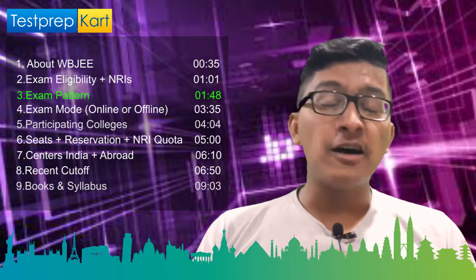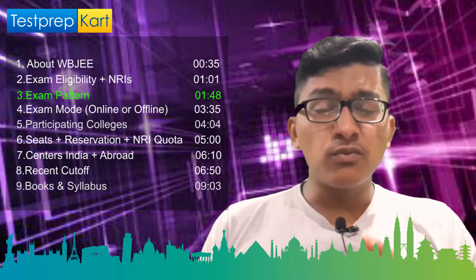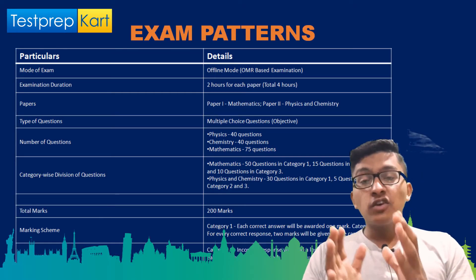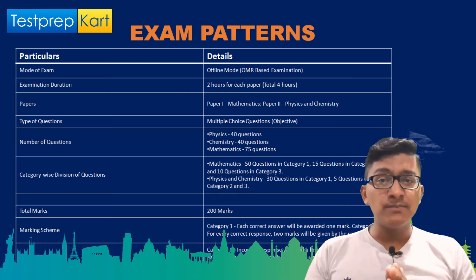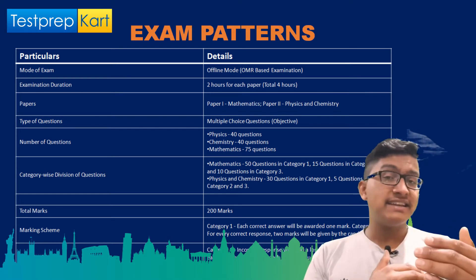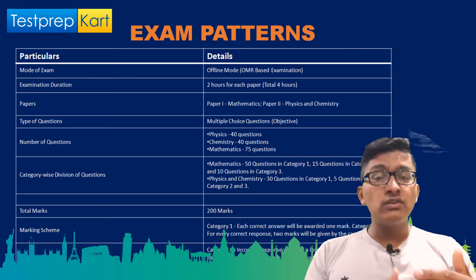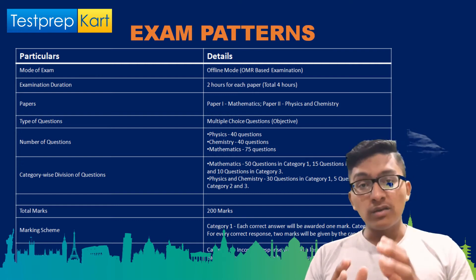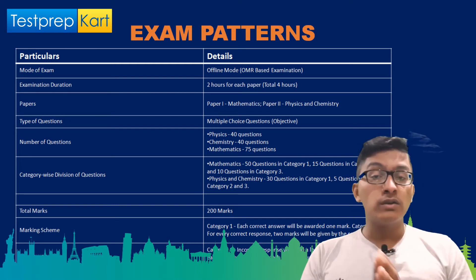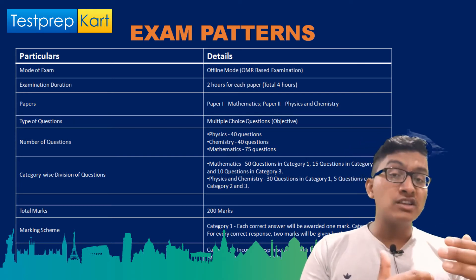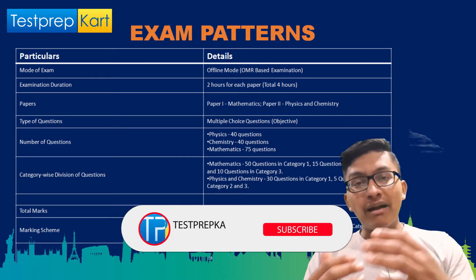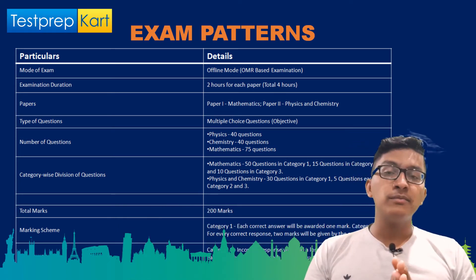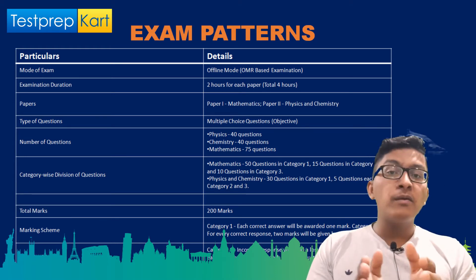The WBJEE exam pattern is somewhat complicated compared to some other regional examinations. There are two papers. Paper 1 is for Mathematics with a total of 75 questions, divided into three categories. Category 1 questions are for 1 mark — correct answers get +1, incorrect get -1/3. Category 2 questions are for 2 marks — correct gets +2, incorrect gets -1. Category 3 questions are also for 2 marks — correct gets +2, but there is no negative marking for incorrect answers.